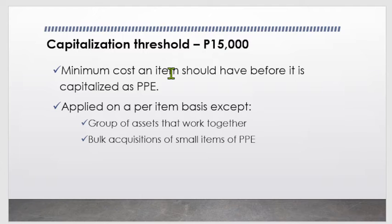The ₱15,000 threshold is the minimum cost an item should have before it is capitalized as PPE. If below that, it is classified as semi-expendable property. Semi-expendable property is recognized initially and then transferred to semi-expendable expenses after a period, typically a month. Accountability is evidenced through the Inventory Custodian Slip (ICS).